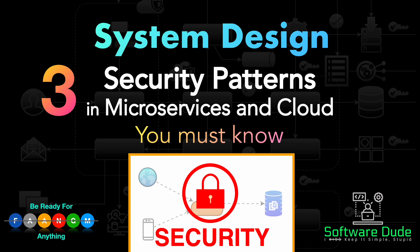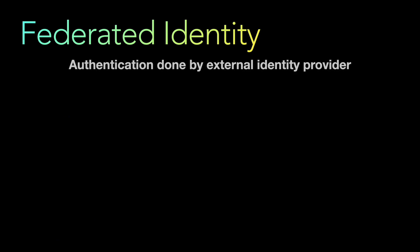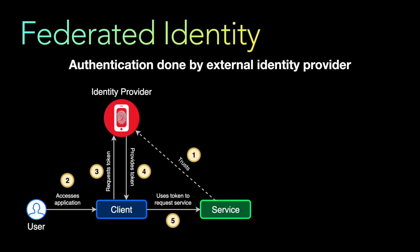The first pattern is the Federated Identity Pattern. Federated identity means authentication is done by an external identity provider — you delegate the identity and authentication to an external provider. As shown in this diagram, the user tries to access a client, the client requests a token from the identity provider, which can be external or internal to the company. The identity provider generates a token and provides it back to the client, and using that token the client forwards the request to the service.